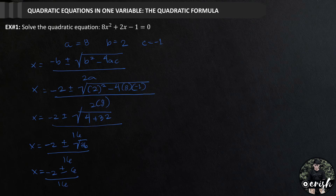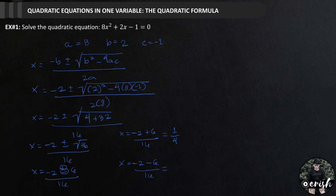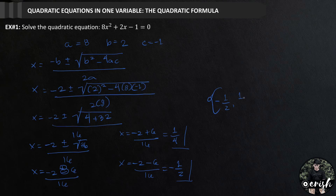We evaluate this expression in two ways to obtain the two solutions. For the positive case: x equals negative 2 plus 6 over 16. Negative 2 plus 6 is 4, and 4 over 16 simplifies to positive 1 over 4. For the negative case: x equals negative 2 minus 6 over 16. Negative 2 minus 6 is negative 8, and negative 8 over 16 simplifies to negative 1 half. Therefore, the solution set for example number 1 is {-1/2, 1/4}.